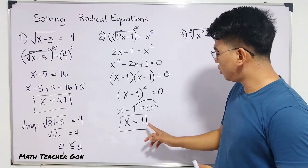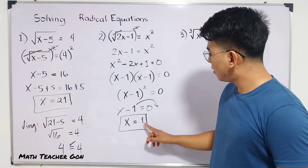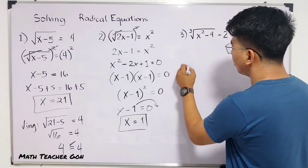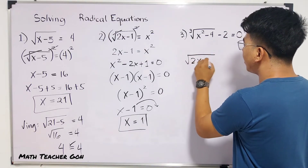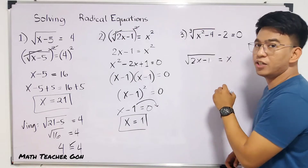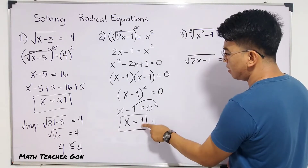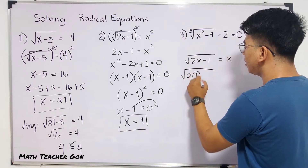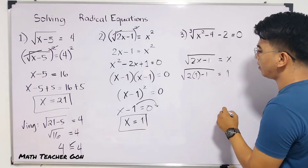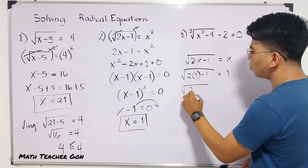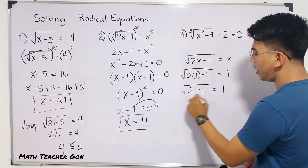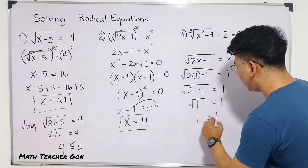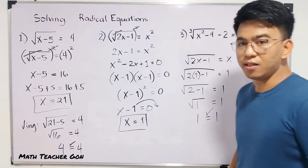Now if you want to check, let's verify. Replace x by 1 in the original equation: the square root of 2 times 1 minus 1 is equal to 1. Simplifying: square root of 2 minus 1 equals 1, which is square root of 1 equals 1. The square root of 1 is simply 1, so they are equal. The equations are equal, confirming our answer is correct.